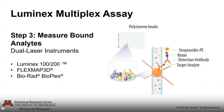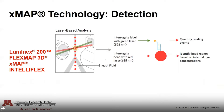Finally, you measure your bound analytes using a dual-laser flow-based instrument. Examples include a Luminex 100 or 200, a FlexMAP 3D, or a Bio-Rad Bio-Flex instrument. These work similarly to a flow cytometer, where your sample is drawn up in a single column and interrogated by two lasers — one to quantify the number of binding events and another to identify the bead region based on internal dye concentrations.